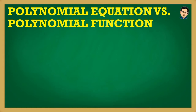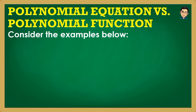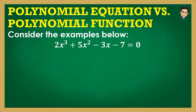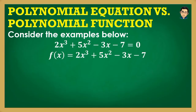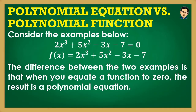Let's have polynomial equation versus polynomial function. Consider the examples below. The first example: 2x³ + 5x² − 3x − 7 = 0. The second: f(x) = 2x³ + 5x² − 3x − 7. The difference is that when you equate a function to 0, the result is a polynomial equation. The first is a polynomial equation; the second is a polynomial function.